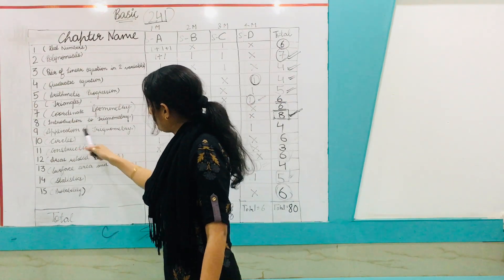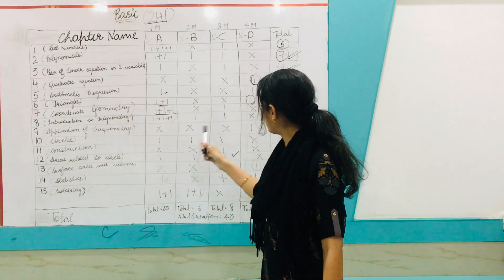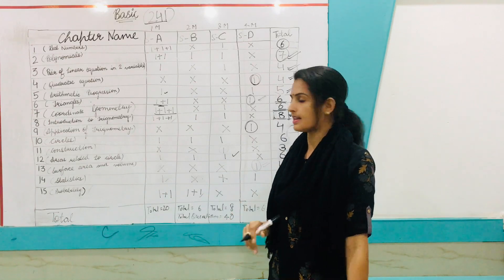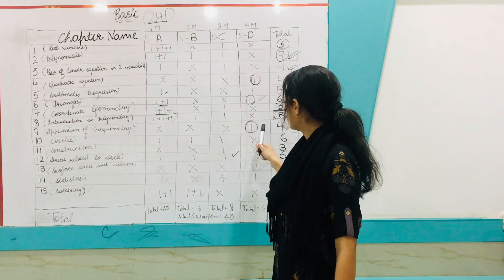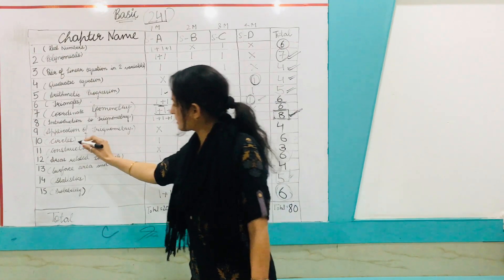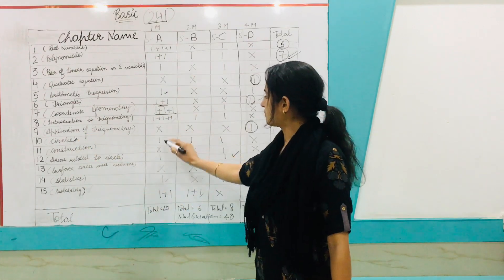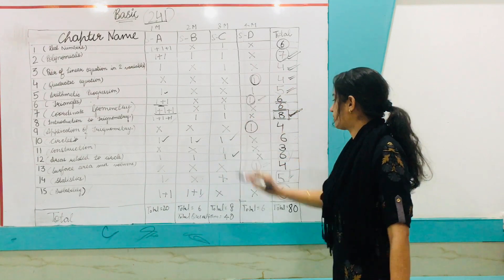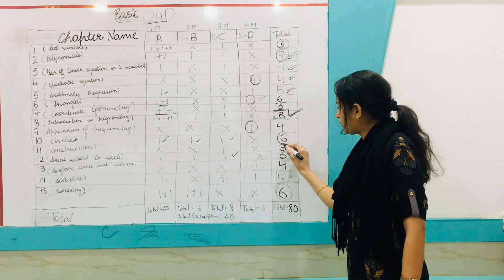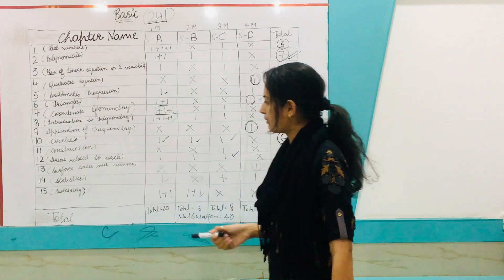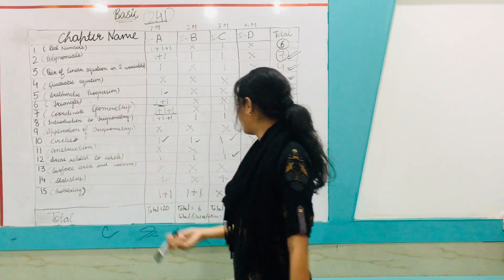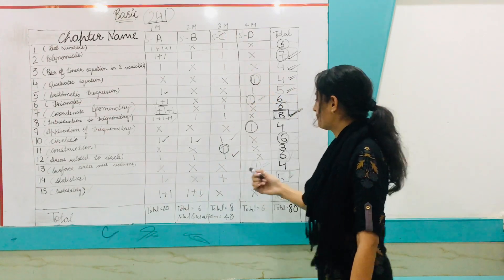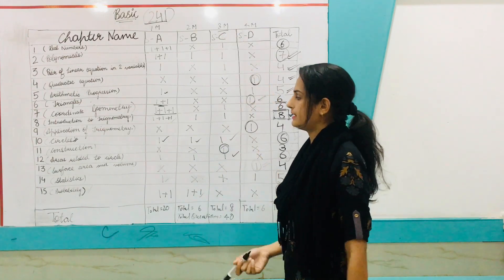Chapter 9, Application of Trigonometry — there will be only one question of four marks. There is only one exercise, so prepare accordingly. Chapter 10, Circles — one question of one mark, one of two marks, and one of three marks, totaling six marks. Chapter 11, Constructions — only one question of three marks; you can focus on just the second exercise.